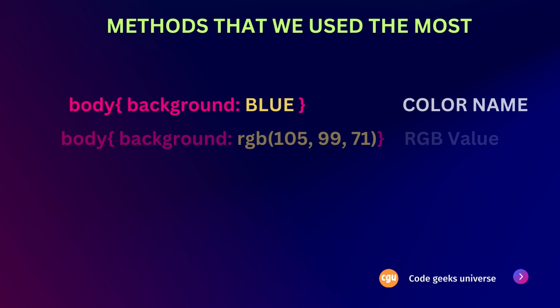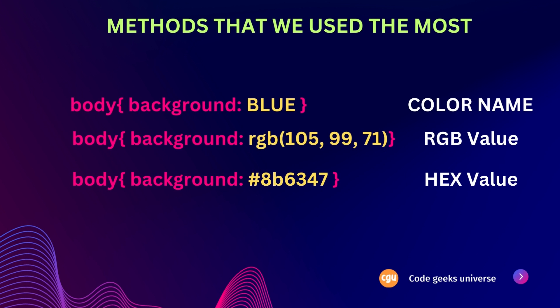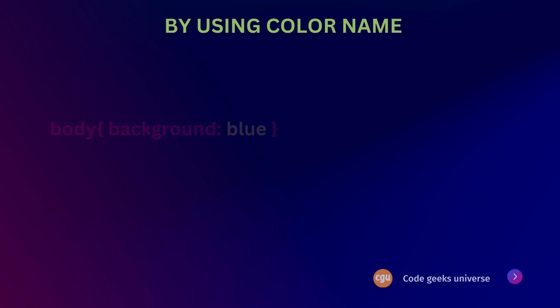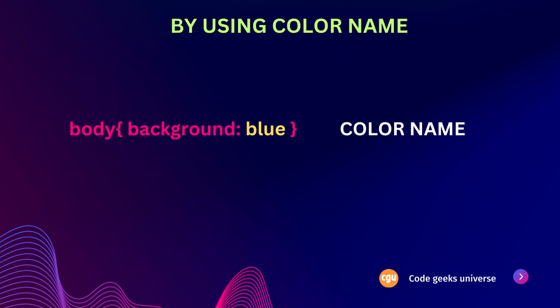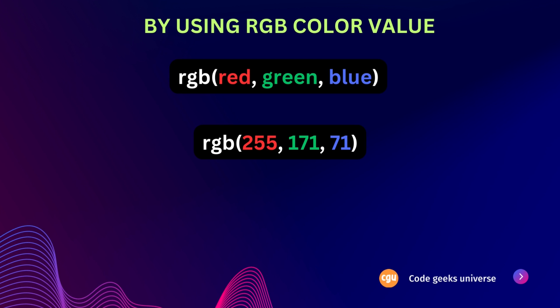In this video we will focus on the methods we use most: specifying colors by name, RGB, and by using the hex code of that color. CSS provides the option to specify colors using predefined color names, so instead of using individual color codes or values, we can simply use common color names. This makes it easier and more intuitive to work with colors in our CSS code.